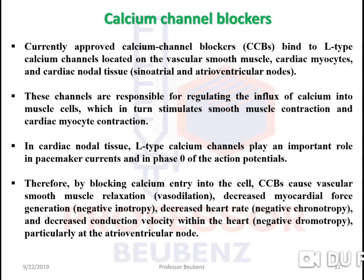Calcium channel blockers cause: vascular smooth muscle relaxation (vasodilation); decreased myocardial force generation (negative inotropy); decreased heart rate (negative chronotropy); and decreased conduction velocity within the heart (negative dromotropy), particularly at the atrioventricular node. The meaning of negative inotropy, negative chronotropy, and negative dromotropy is most important as far as GPAT is concerned.